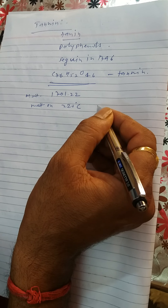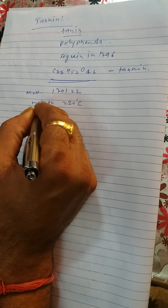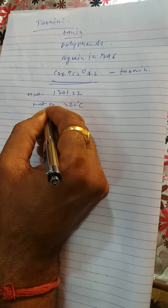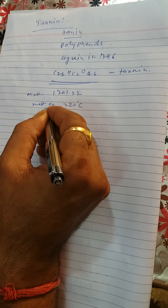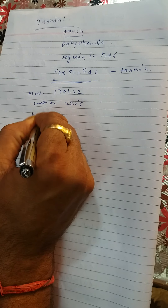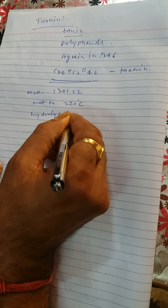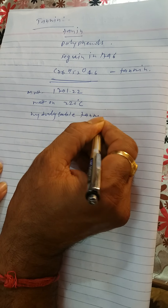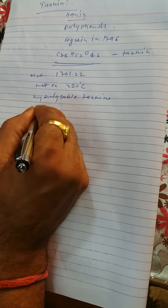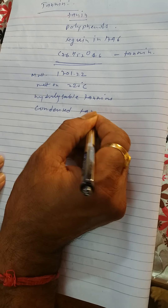Tannins do not denote a single compound; they include a large class of organic substances which often differ widely in chemical composition and reaction. Tannins are divided strictly into two distinct classes based on the type of phenolic nuclei involved and the way they are joined: the first class is referred to as hydrolysable tannins, and the other is called condensed tannins.